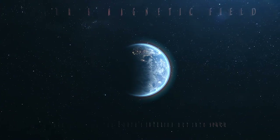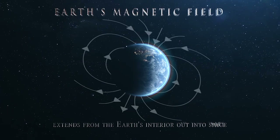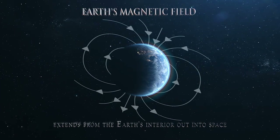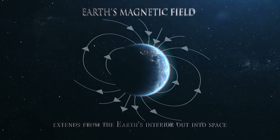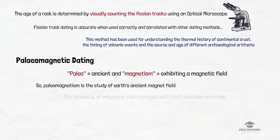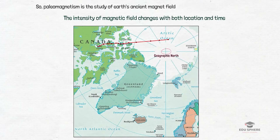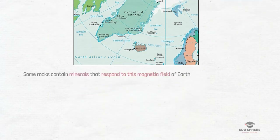As you can see in this graphical representation, the magnetic field represented by the arrows is generated by an imaginary dipole magnet located at the center of the earth, with the north and south magnetic poles located near the geographic north and south poles. Do remember that this magnetic field is different in different places and changes with both location and time.